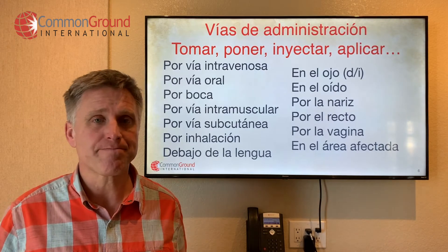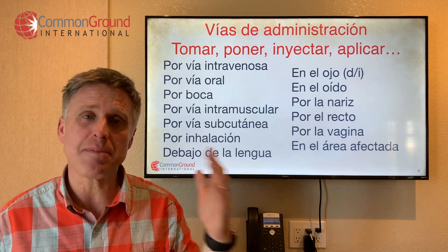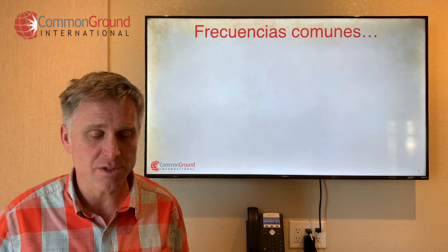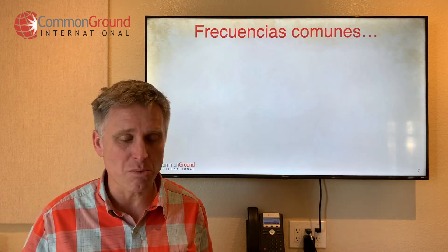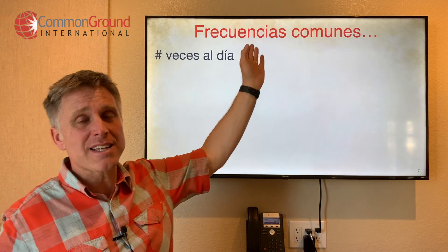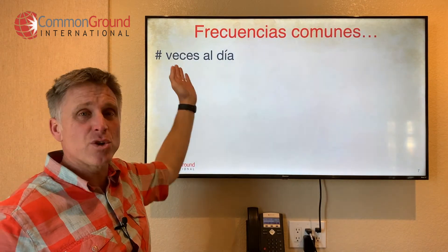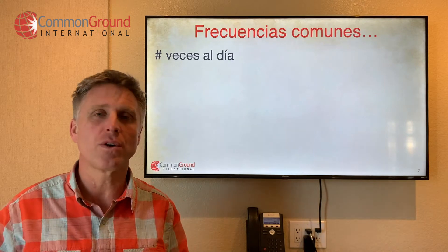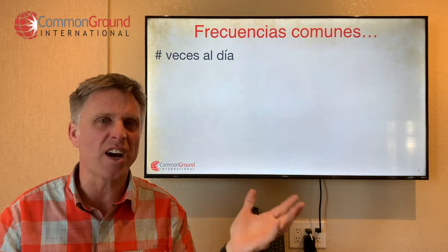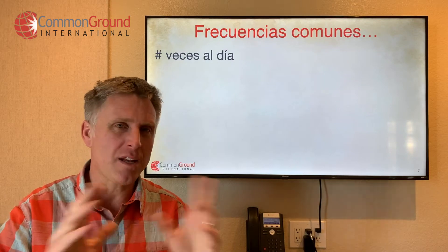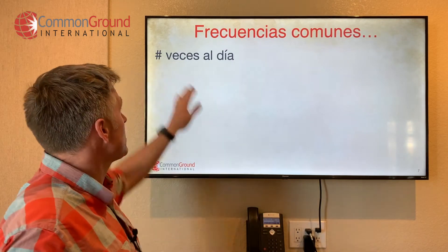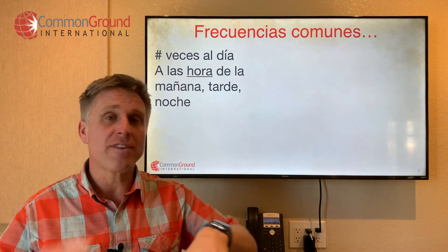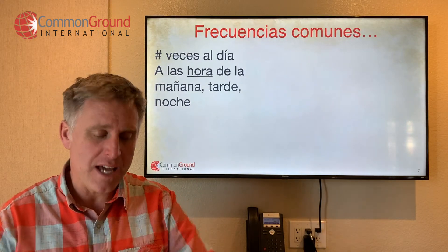So tenemos formas, tenemos vías de administración, y ahora nos faltan las frecuencias. We need to take a look at some frecuencias comunes. Any número of veces al día — veces is your word for 'times.' You'll never say tiempos al día or tiempos por día — it's a false cognate, it doesn't mean 'times' like occurrences. So you have to say veces — veces por día. A las — any given hour — a las ocho, a las nueve, a las diez.